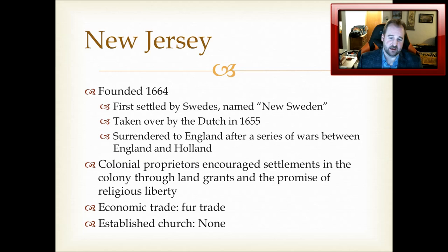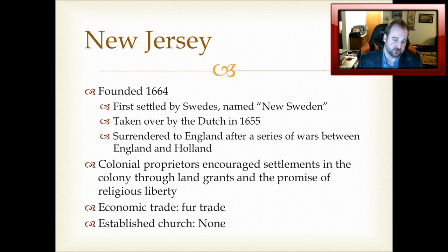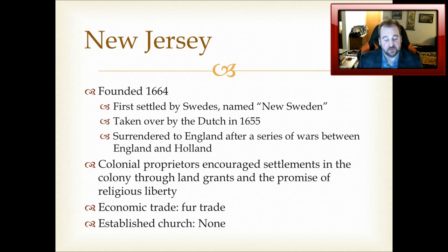New Jersey, much like New York, was once owned by the Dutch, but actually passed between several powers. It was founded in 1664, first settled by Swedes and named New Sweden, then taken over by the Dutch, and then granted to England after the Anglo-Dutch Wars. The colonial proprietors encouraged settlements through land grants and the promise of religious liberty. New Jersey was one of the few colonies that did not have an established church — it really embraced religious liberty, unlike Massachusetts, which maintained strict adherence to Congregationalism and used test oaths to prevent non-Congregationalists from obtaining civil office. Its economic trade was fur trade.